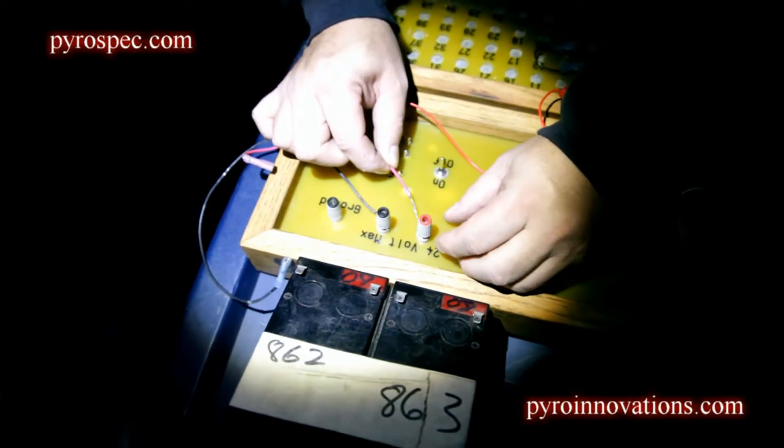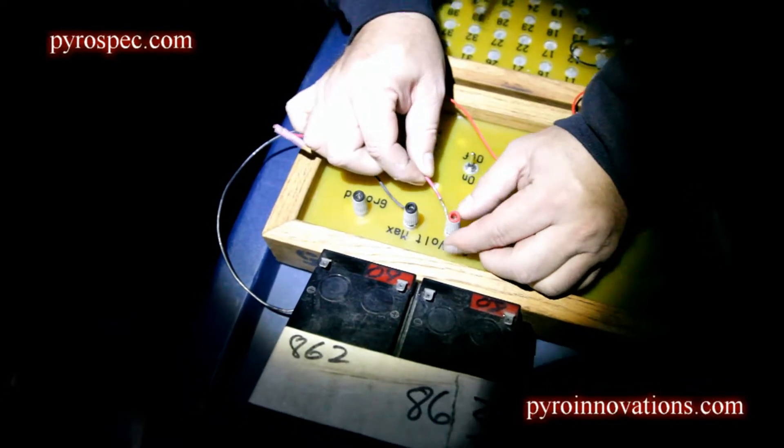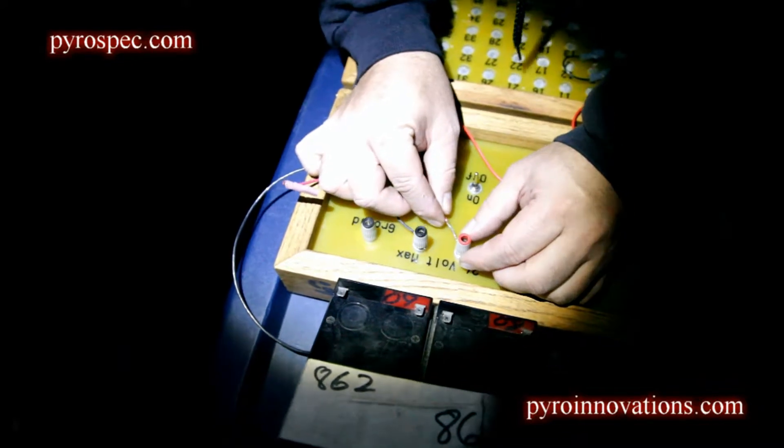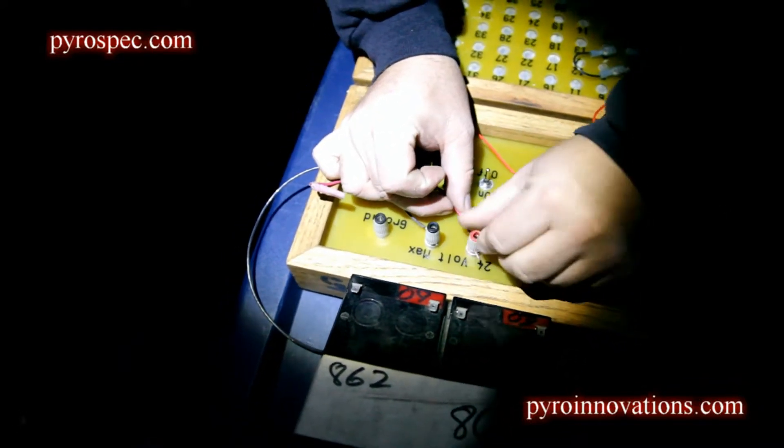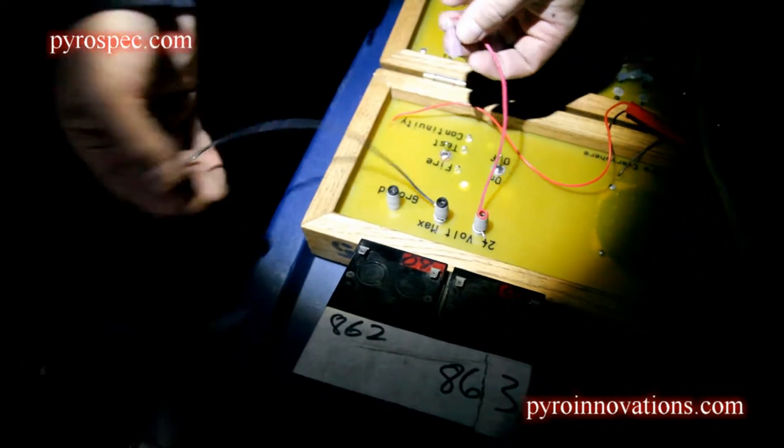When you're getting ready to fire the display and wiring up the batteries to your firing system, the first thing you do is connect the wires to the firing system itself. You always connect to your power source last. Now that the battery wires have been connected to the firing board...